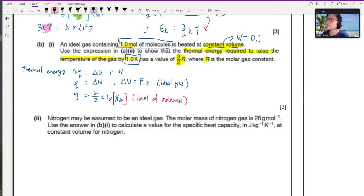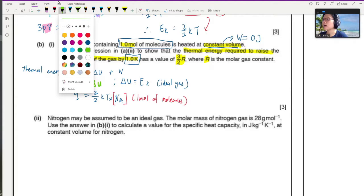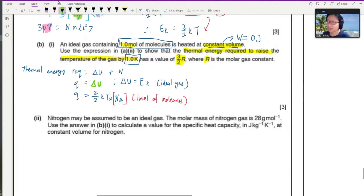Since our volume is constant, the thermal energy required Q is just equal to your change in internal energy because the work done here is zero. And at the same time, your change in internal energy is equal to EK for ideal gas, because the intermolecular forces are negligible. So there is no potential energy. So your internal energy is only due to the movement of the particles.